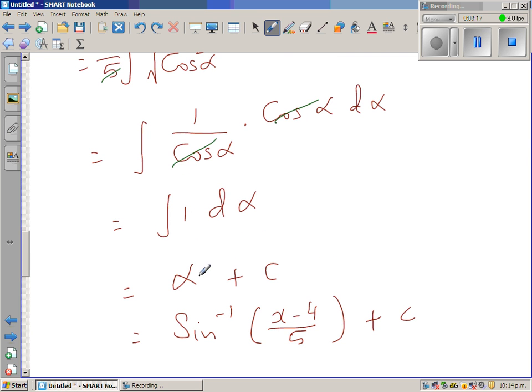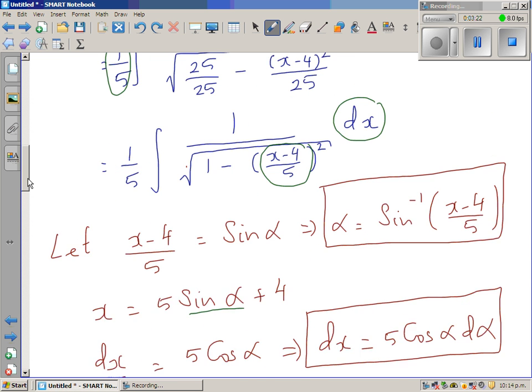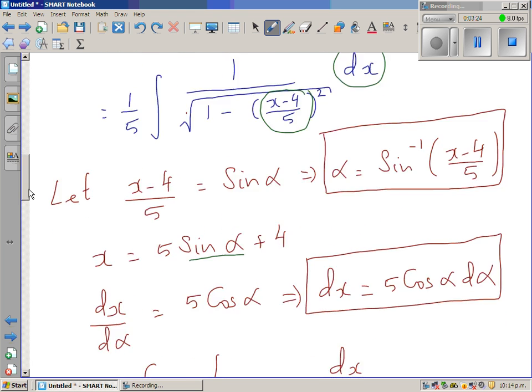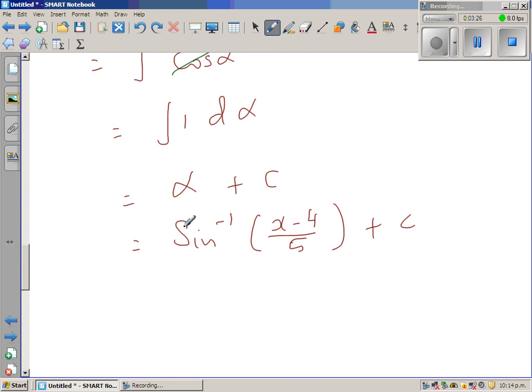Integration of 1 d alpha is alpha plus c. And alpha we have already seen is sin inverse of x minus 4 over 5. So this is your answer.